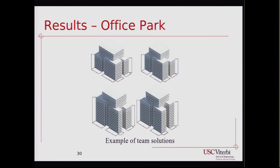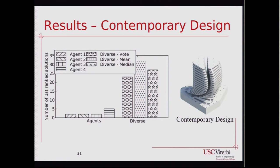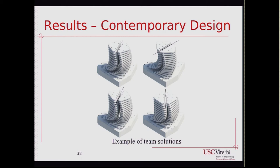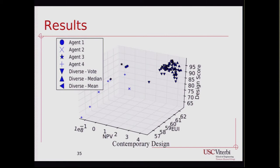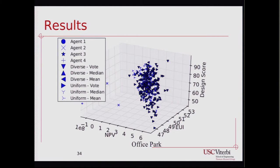For the contemporary design, we are still missing results for the uniform team, but we can already show that the diverse team finds a large number of first-ranked solutions. We also plot these solutions in the space of the three optimization factors so we can see the Pareto frontier. There is a large number of different solutions — not all solutions aggregating to a single point. For the contemporary design, there is a small cluster in the corner, but overall we achieve good coverage of the Pareto frontier.